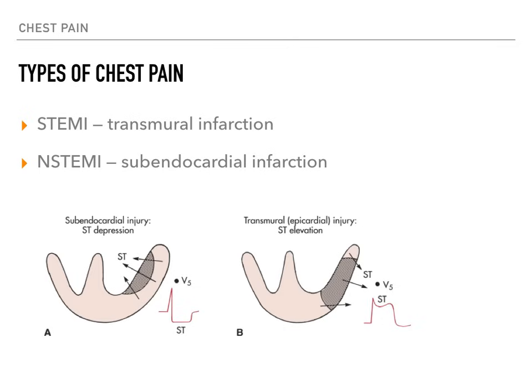This is really super high yield. Boards love this — they won't give you STEMI or NSTEMI in the answer choices. They'll say something like 'transmural infarction' and you have to know that means STEMI. Consequently, they might say 'subendocardial infarction' and you have to know that means NSTEMI.